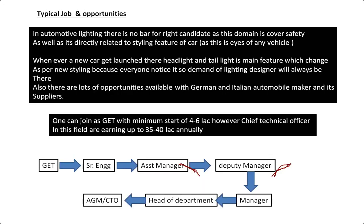The job opportunities are very huge — it's not just about four-wheelers. Two-wheelers also have headlights and tail lights, as do four-wheelers, commercial vehicles, and passenger vehicles. Even 16-wheel and 18-wheel trucks must comply with regulatory requirements for indicators, tail lamps, and headlamps. So the opportunities in this field are endless across all segments of the automotive industry.